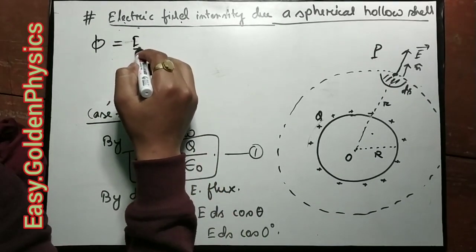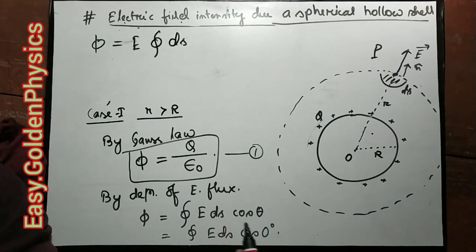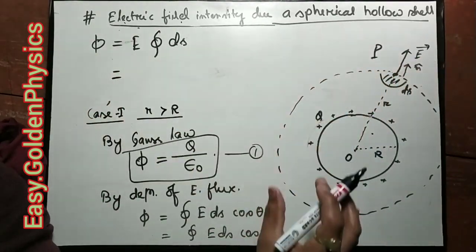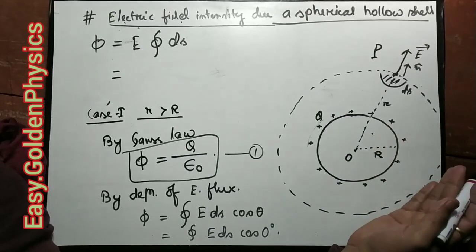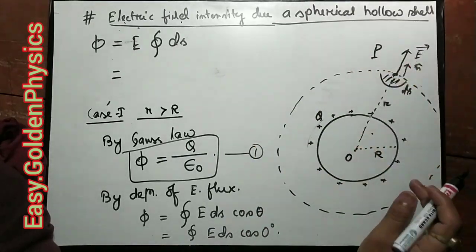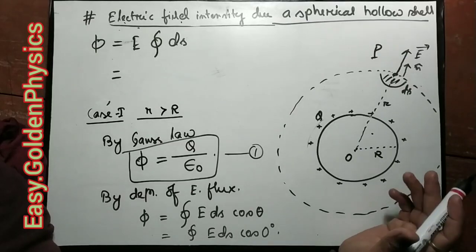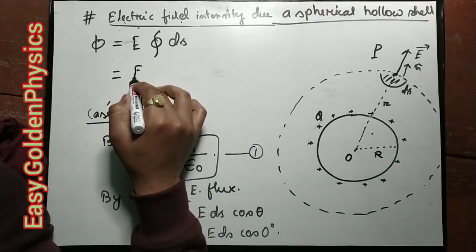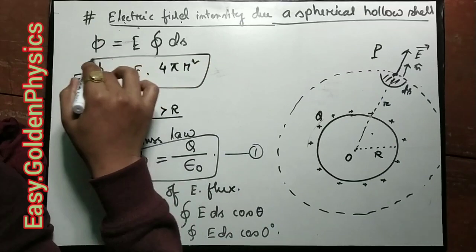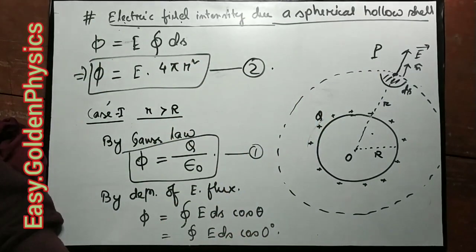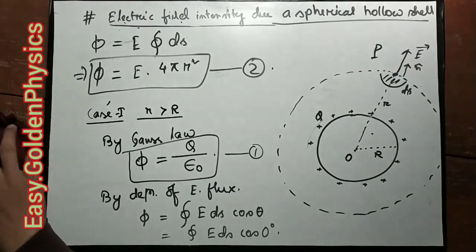The closed integral of E dot ds equals E times the total surface area. The outer spherical Gaussian surface has radius r, so the total surface area is 4 pi r squared. This gives the second equation from the definition of electric flux.